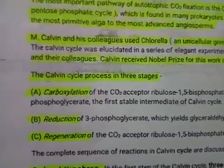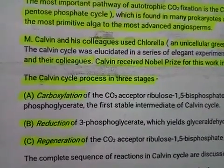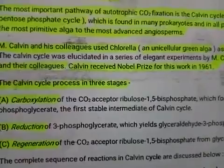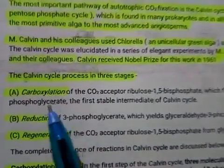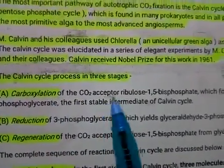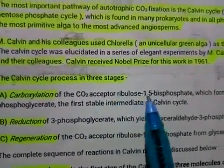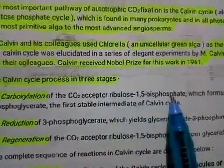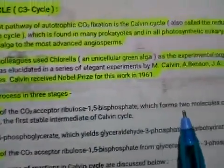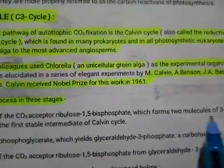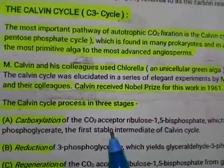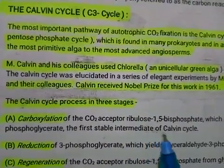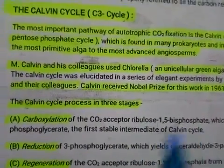Carboxylation involves the CO2 acceptor molecule RUBP — that is, ribulose 1,5-bisphosphate. The carboxylation of RUBP forms two molecules of 3-phosphoglycerate, which is the first stable intermediate of the Calvin Cycle.